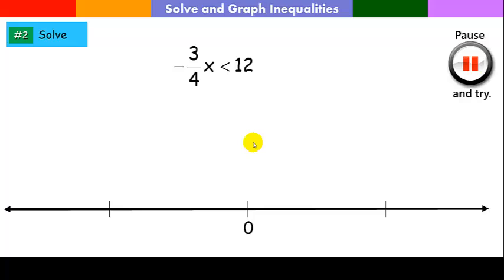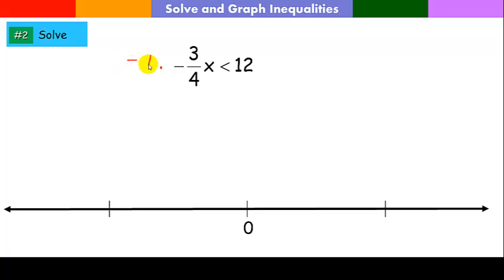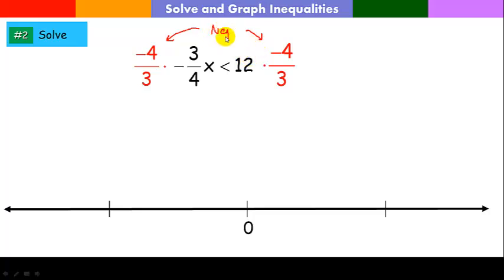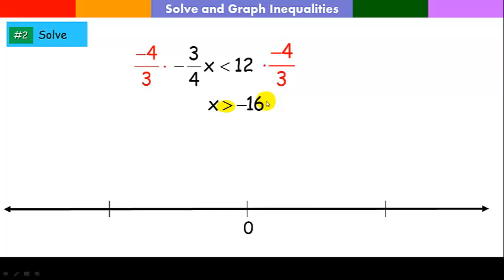For the next one, to get x alone I need to multiply by the reciprocal of negative 3 over 4, which is negative 4 over 3. I have to do it to both sides. Notice I've multiplied both sides by a negative, so I have to switch the inequality sign. Now x is alone because all that stuff cancels out. Over here, 4 times negative 4 is negative 16. So x is greater than negative 16. The boundary point is at negative 16, and it's open because it says all x's greater than negative 16.